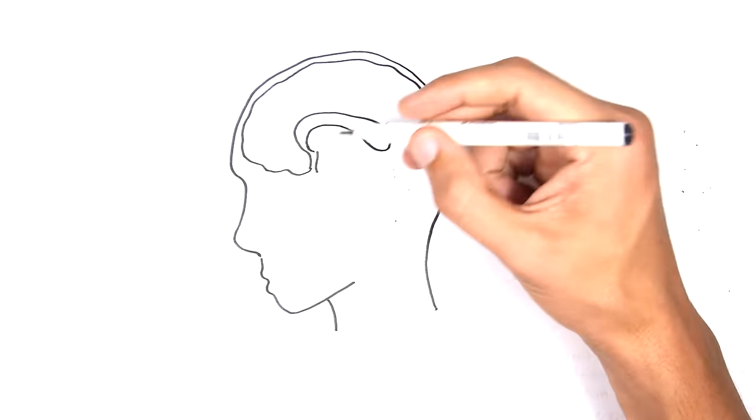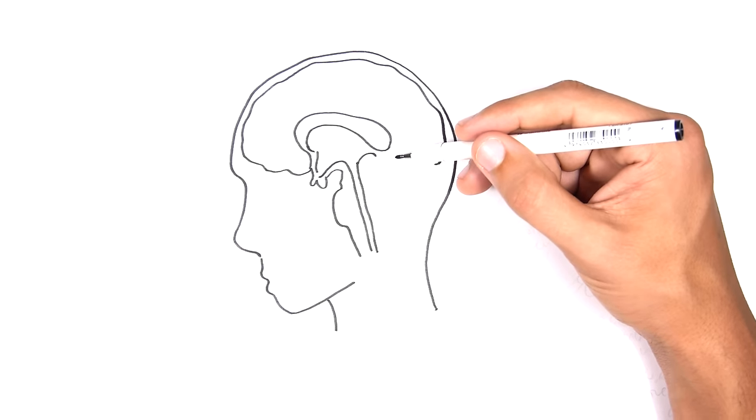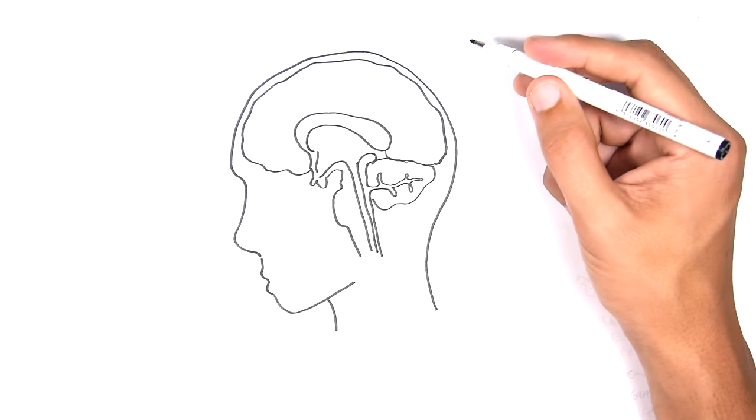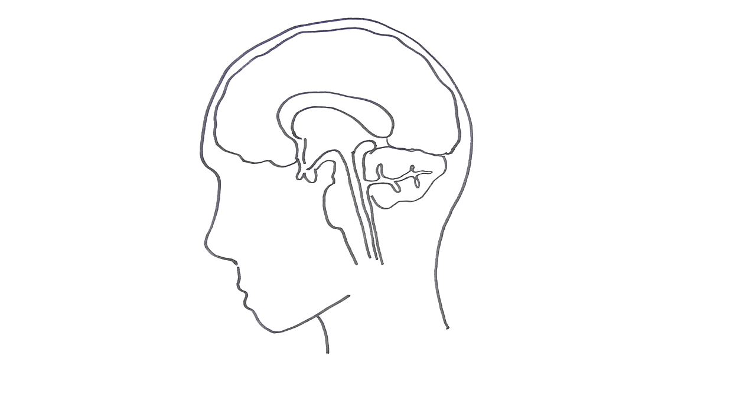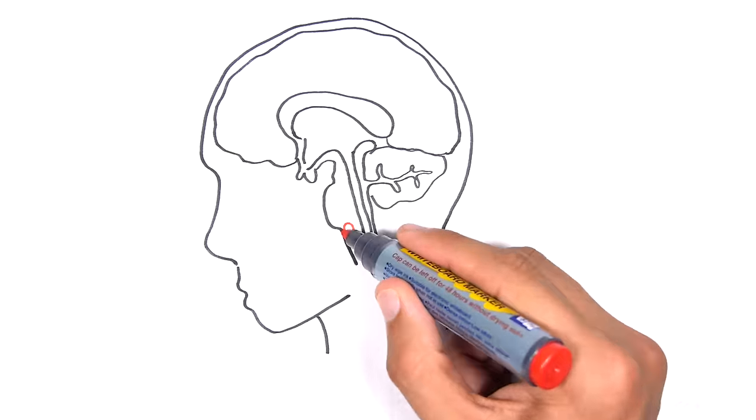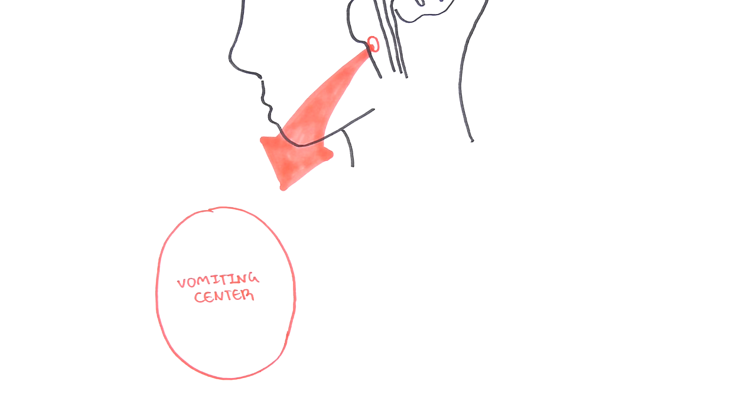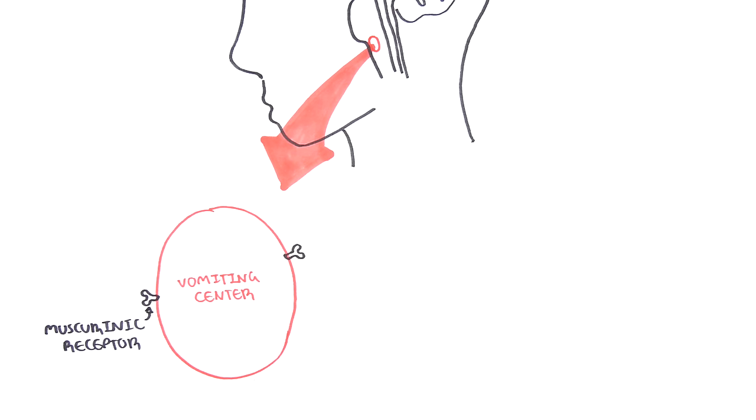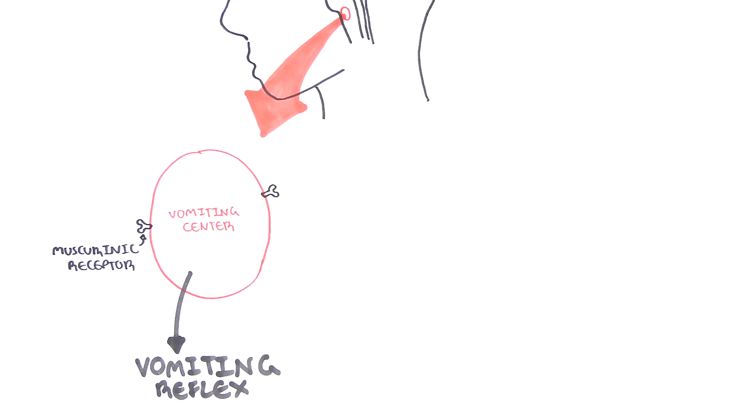We will look at the so-called emetic reflex, which is the vomiting reflex. In order to understand the vomiting reflex, we need to talk about the brain. Here is the brain and the brain stem. There's an area of the brain stem called the medulla oblongata, where we find the vomiting center. The vomiting center contains muscarinic receptors. When these receptors are stimulated within the vomiting center, this will trigger the vomiting reflex.